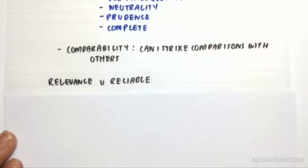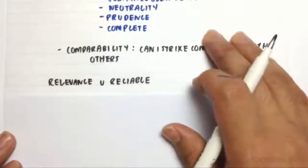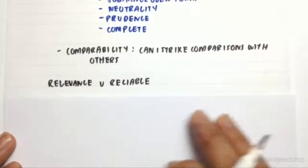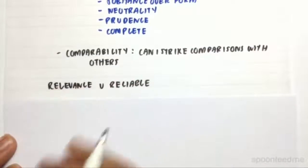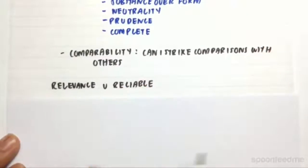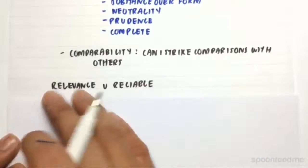And then lastly, the trade off is of course relevance and reliability. If it's really relevant, usually it's not really reliable because the information is really current. It hasn't been proved yet. Whereas if it's reliable, usually it's already been proved in the past. However, it's not relevant for our current decision because it's old information.